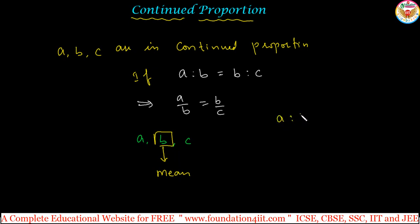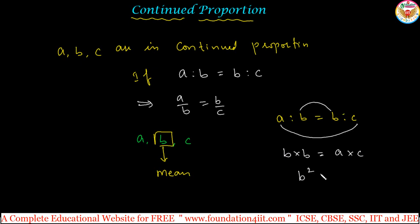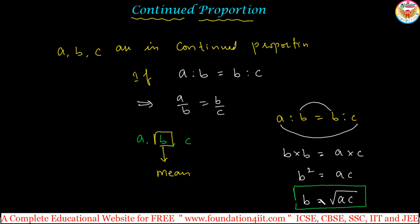Since A is to B equals B is to C, by the proportion rule — product of the means equals product of the extremes — B into B equals A into C. So B squared equals A times C, meaning B equals the square root of A into C. If you know the first and third terms, you can find the mean proportion using this formula. The square root of the first term times the third term gives the mean proportion.